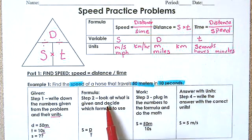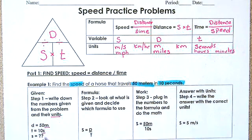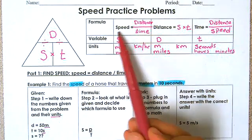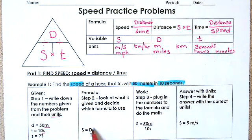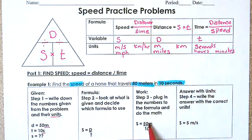Look at what is given and decide which formula to use. We're looking for speed, and we're given distance and time, so we use: speed equals distance divided by time. Then plug in the numbers — speed equals 50 meters divided by 10 seconds. Notice I kept the units because that helps figure out the units for the answer.